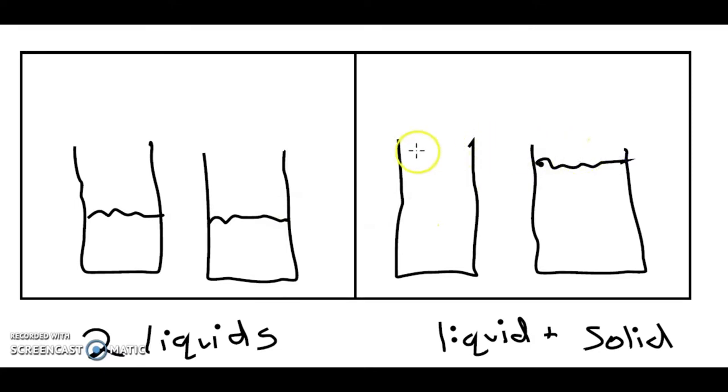And we ended up with a liquid and some sort of cloudy white stuff. And so we got to try to represent this on the particle level. It appeared to have some sort of chemical change. We definitely had a chemical reaction that happened because we have something new that was made. There was nothing white beforehand, and then there's something white afterwards.